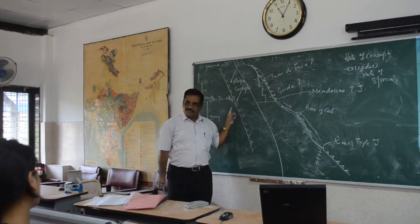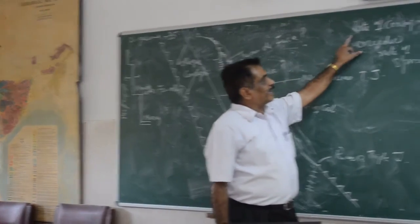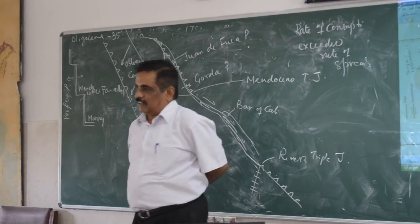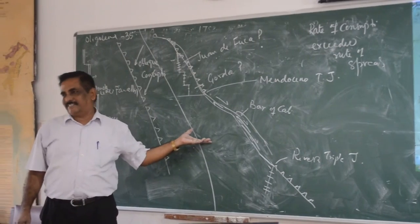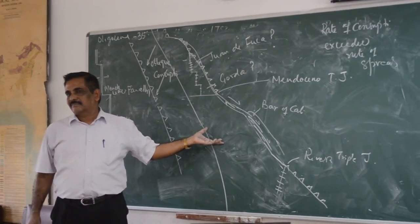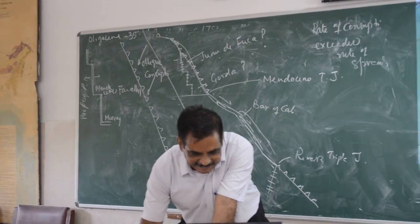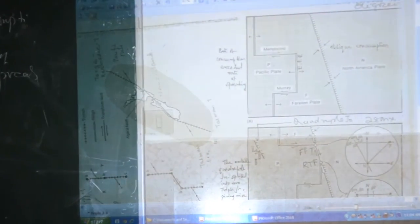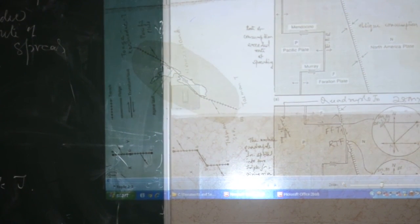So these are the reasons why transform margins are created. Now you are seeing a single transform — this will be broken into two. So, the reasons are: the rate of convergence exceeded the rate of spreading. That is the Mendocino case, right? Otherwise, these spreads cannot be simulated. So, the idea is certain where...